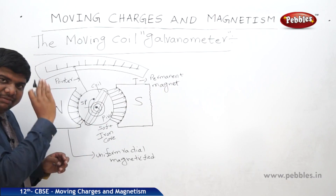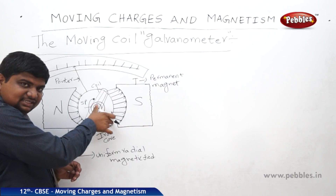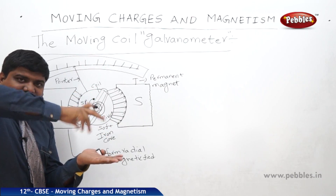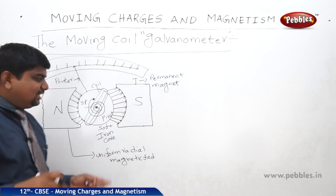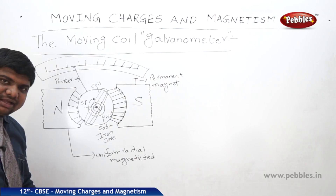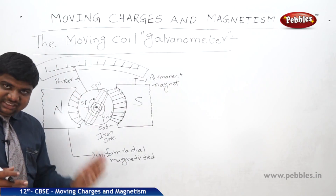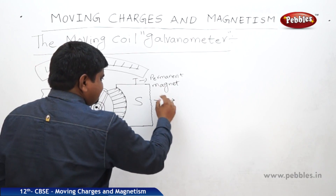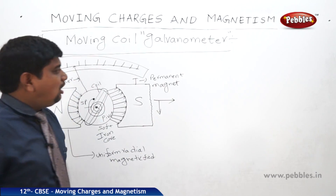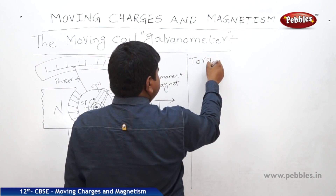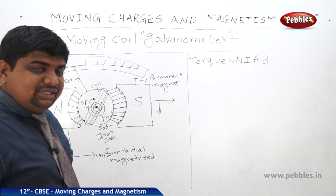When the moving coil galvanometer — connected with the spring and pivot — is placed between the two magnets, a certain amount of magnetic field is applied. Because of this applied magnetic field between north and south poles, the coil experiences a torque and rotates, causing the spring to compress. The torque is equal to NIAB — force into perpendicular displacement, ILB into displacement.